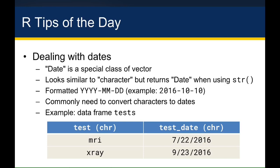It's pretty common that you'll need to convert characters into dates, especially if they haven't been coded correctly. Let's take a look at this example data frame called 'tests' and see how we would go about coding the date correctly. This data frame has two tests — an MRI and an x-ray — and a column called test_date with the actual date in it. We can see from the 'chr' label that it has been incorrectly coded as a character variable.